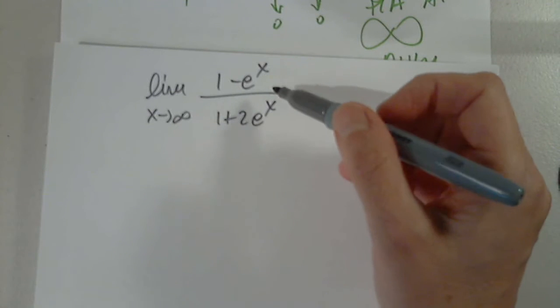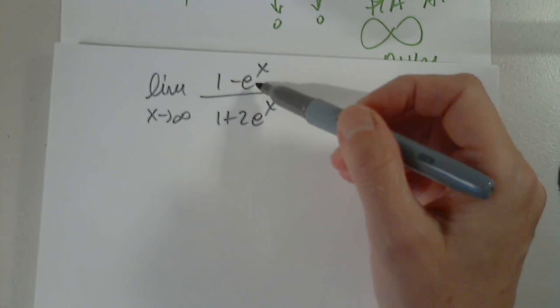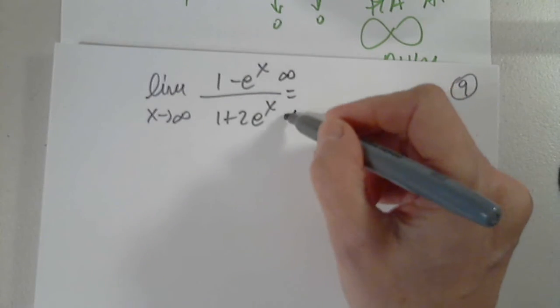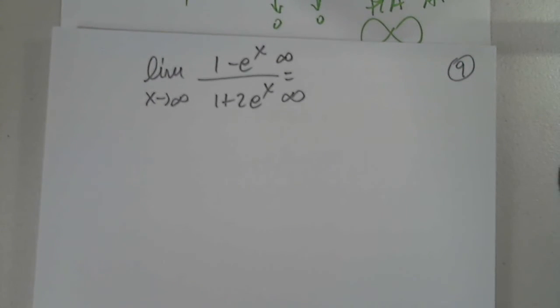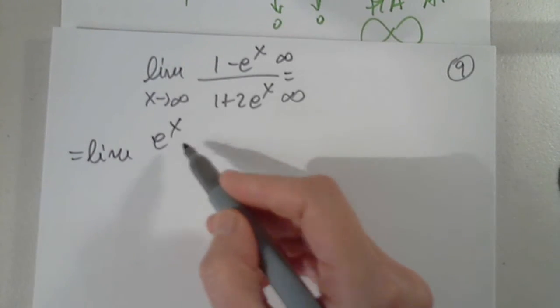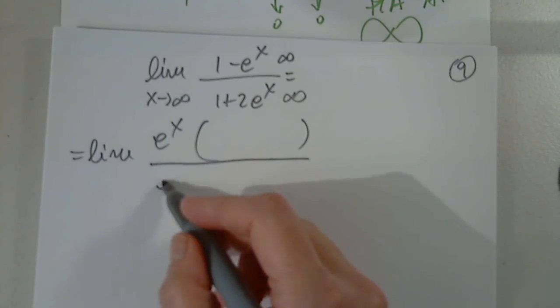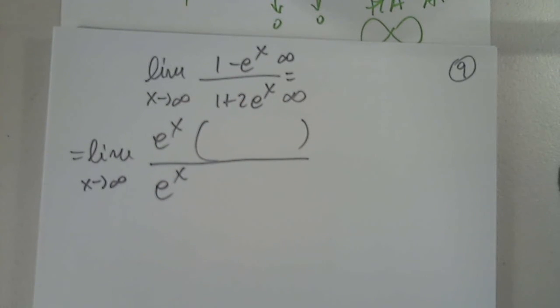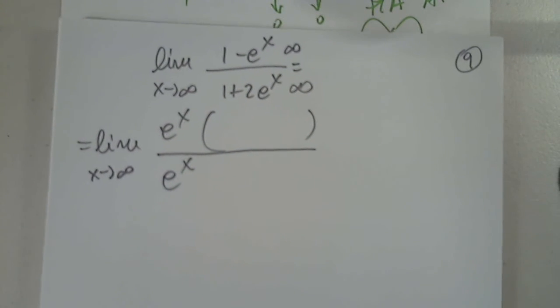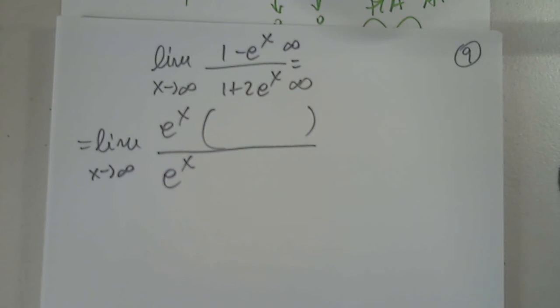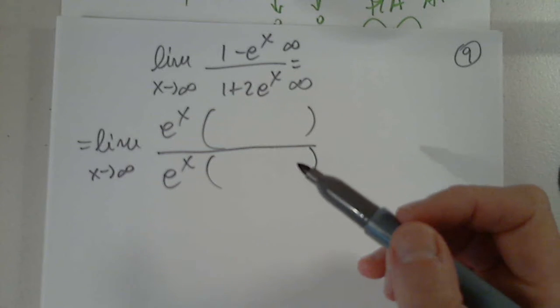The numerator goes to negative infinity and the denominator also goes to infinity. This is an indeterminate case. I'm going to try to factor out e to the x from both. We did this problem in class. If you redo the problems we did in class, there is no problem that you cannot address.